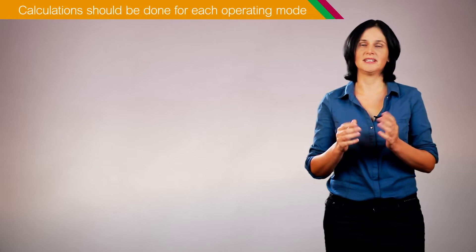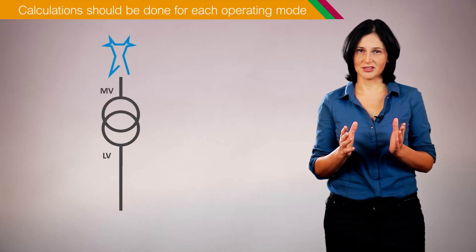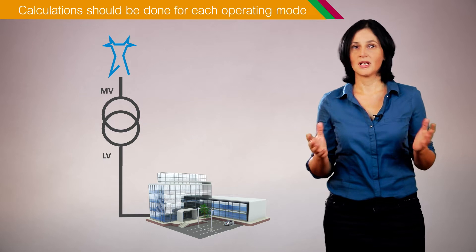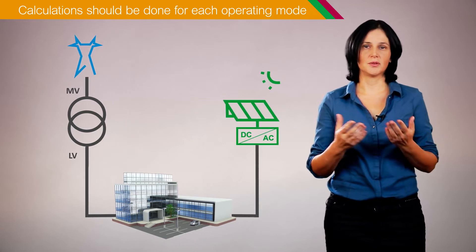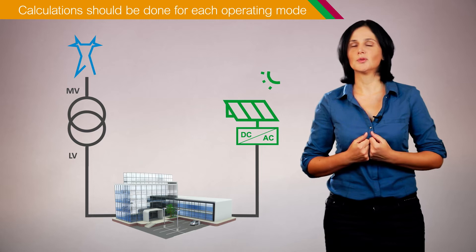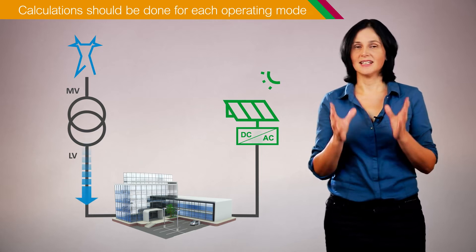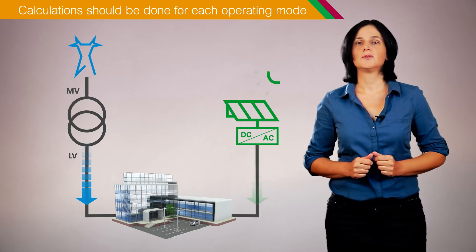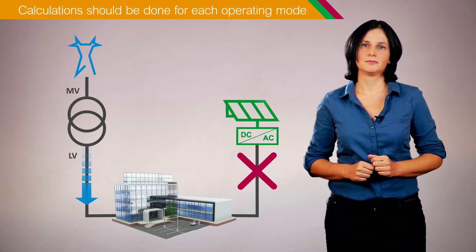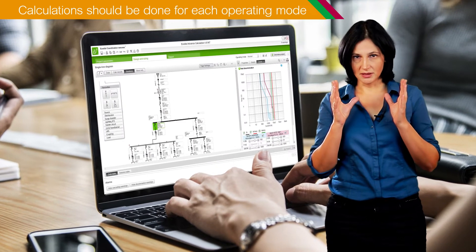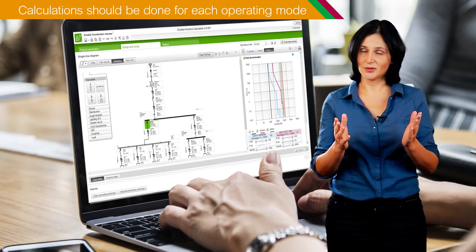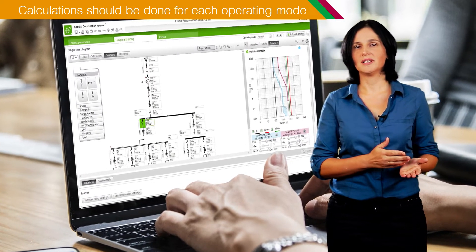Let's start with the first point. An electrical installation supplied by the grid and without local production has only one operating mode. When adding photovoltaic production for self-consumption, the installation now has two operating modes: supplied by the grid and the photovoltaic system in parallel, or supplied only by the grid when the photovoltaic system does not produce energy. Consequently, a calculation should be done for each operating mode because calculations can result in significantly different power and current values from one operating mode to another.